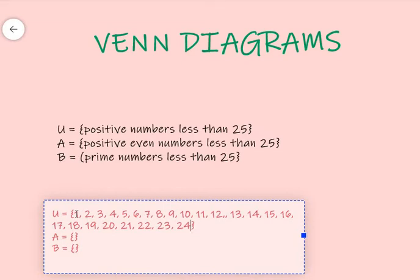So now, let's do the same thing for set A. What are all elements in set A? Positive even numbers less than 25. So, positive even numbers. That's 2, 4, 6, 8, 10, 12, 14, 16, 18, 20, 22, 24. That's where we end.